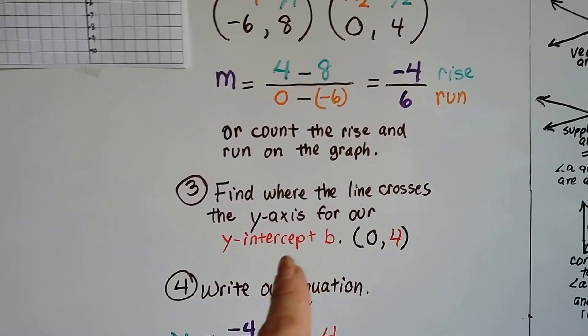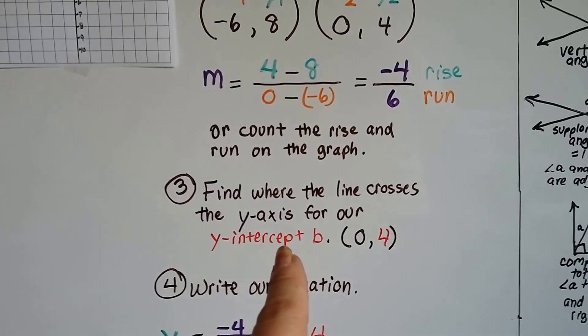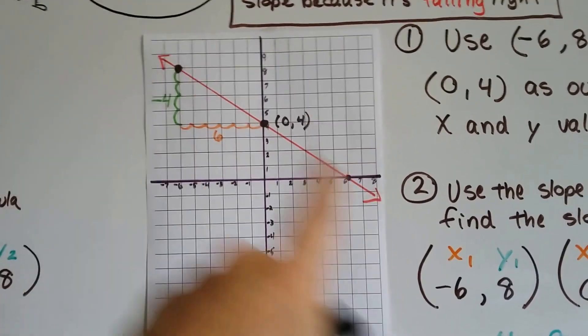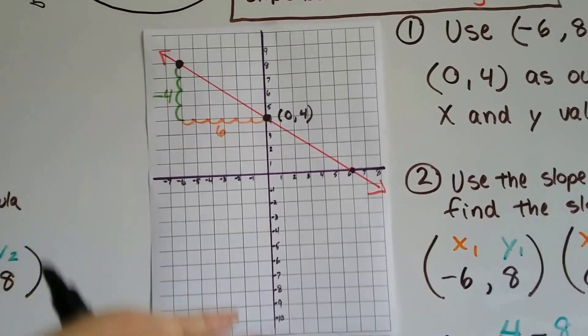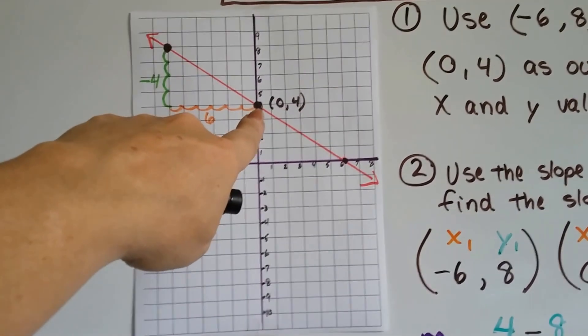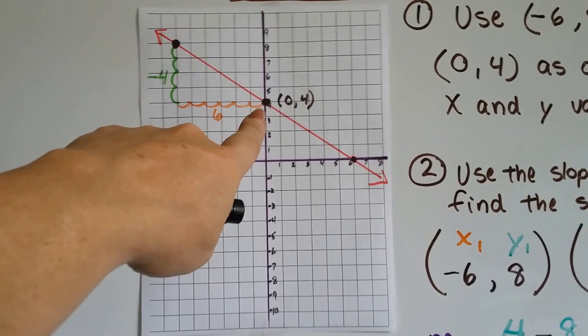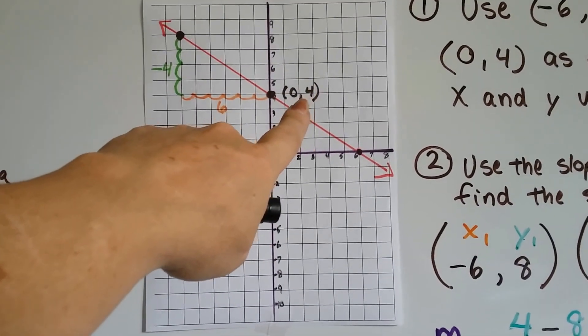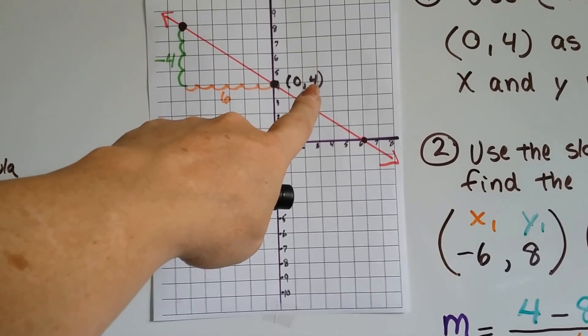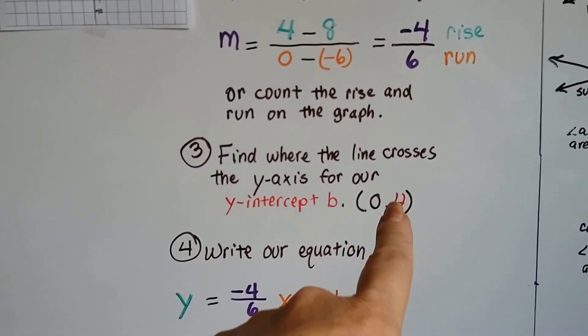Now, we find where the line crosses the y-axis for our y-intercept b. Where is the line crossing the vertical y-axis? It's hitting it right here at 0, 4. And it's perfect, because x is supposed to be 0. And whatever the y-value is, that's our y-intercept. So, we know our y-intercept is going to be a 4. So, we've got 0, 4.